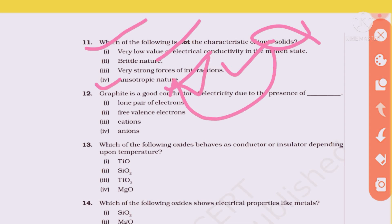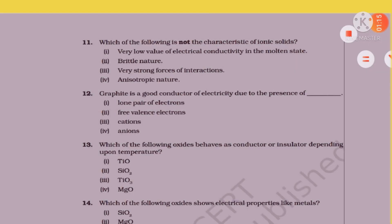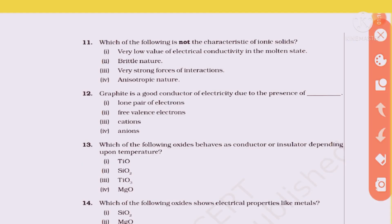Ionic solids have very strong forces of interaction between ions — positive and negative. They can break easily so brittle nature is correct. The incorrect characteristic is 'very low electrical conductivity in molten state' — that is completely wrong for ionic solids.